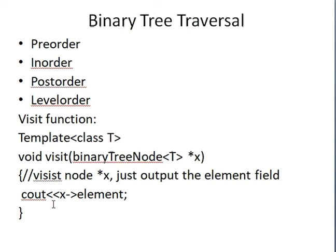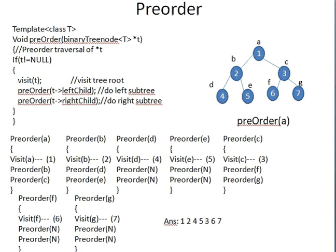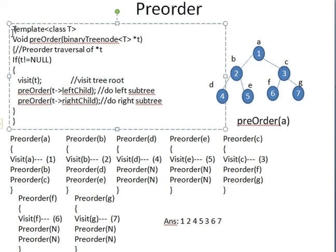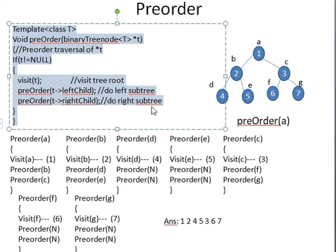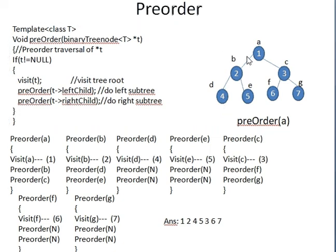We'll use the visit function everywhere. Now let's look at the pre-order program. The pre-order program is a small piece of code but you must understand how it works - different traversal methods will almost certainly be asked in exams. The program is small but grows when called because it recursively calls the same function again and again, using recursion.